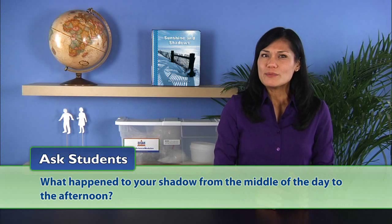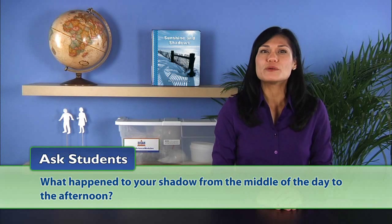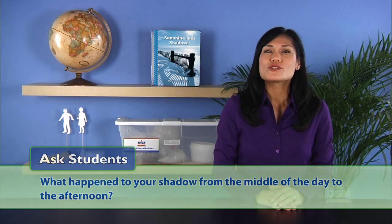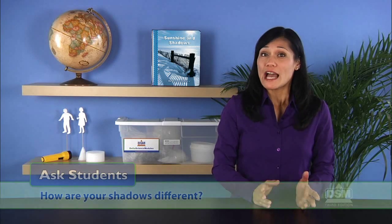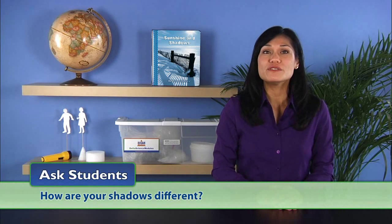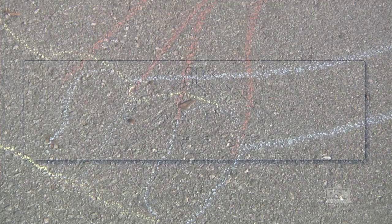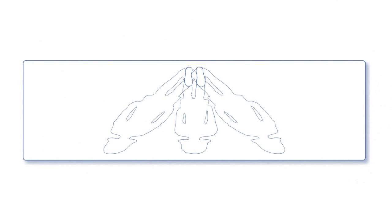Ask students, what happened to your shadow from the middle of the day to the afternoon? Students should suggest that it changed again. Then ask, how are your shadows different? Students should say that they are different in places, they are different shapes, and there are differences in how long they are.